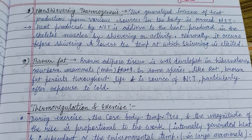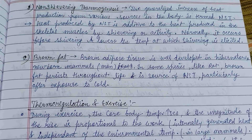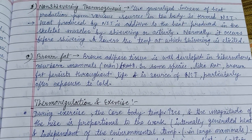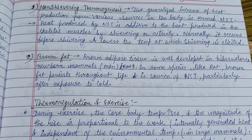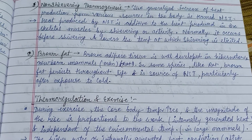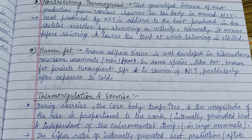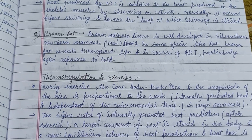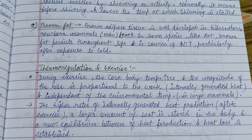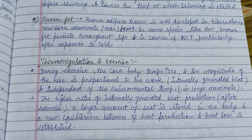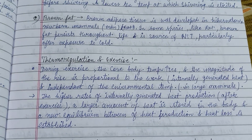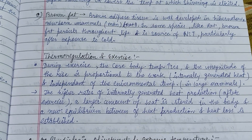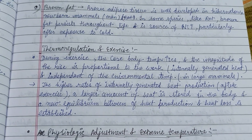This activity includes the shivering effect. Non-shivering thermogenesis is the generalized increase of heat production from various sources in the body. It is additive to the heat produced in the skeletal muscles by shivering or activity. Brown fat is mainly present in small infants; brown adipose tissue is well developed in hibernating and newborn mammals.